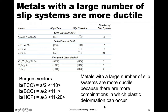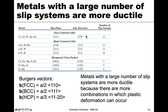The general trend is that metals with a large number of slip systems tend to be more ductile, because there are more combinations in which plastic deformation can occur. FCC metals like copper, aluminum, nickel, silver, and gold are very ductile and can be hammered into shape easily. However, HCP metals like titanium, zinc, cadmium, and magnesium are relatively more brittle because there are fewer combinations of slip systems available.